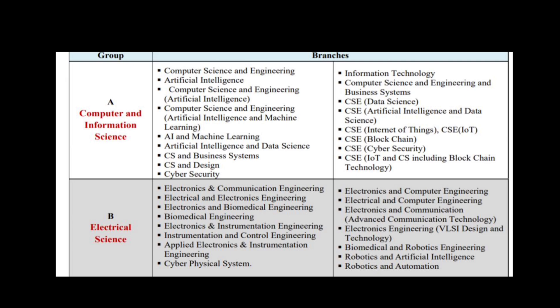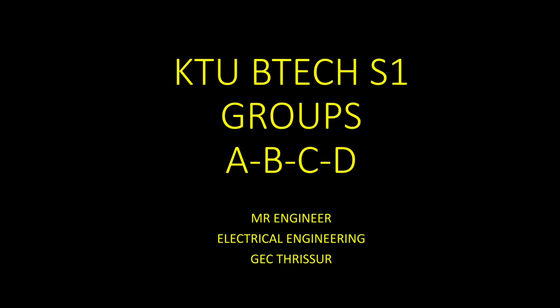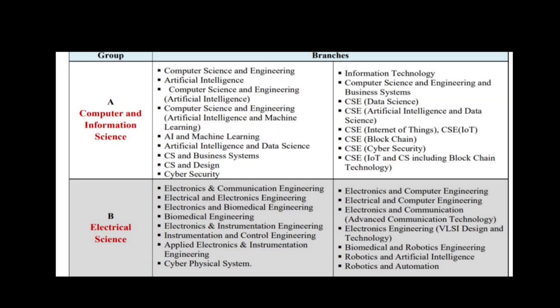Group B covers Electrical Science, Electrical and Electronics, Electronics and Communication, Biomedical Engineering, and Cyber Physical Systems. It also includes Electrical and Computer, Biomedical and Robotics, and Robotics and AI.